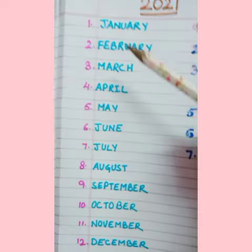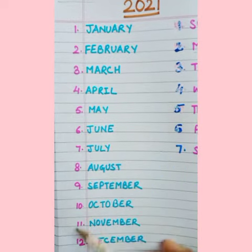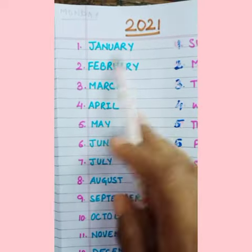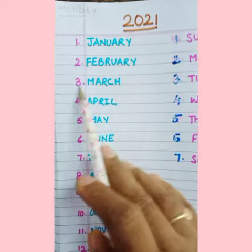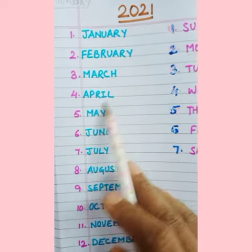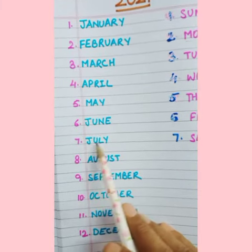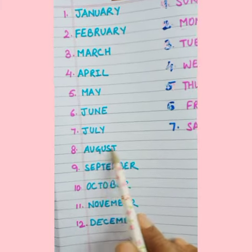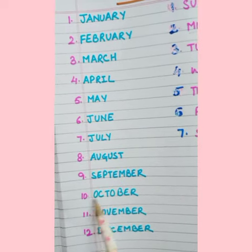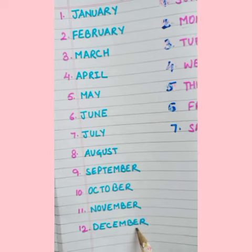Now this is month's name. I have given here the number to these months. First, January. Two, February. Three, March. Four, April. Five, May. Six, June. Seven, July. Eight, August. Nine, September. Ten, October. Eleven, November. Twelve, December.